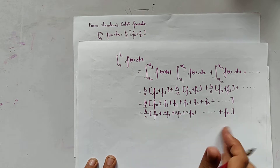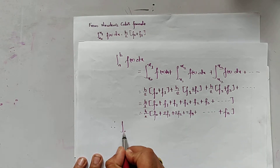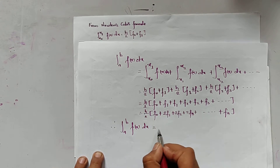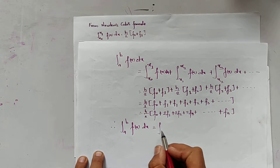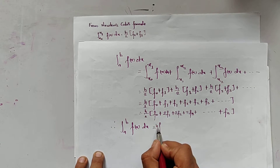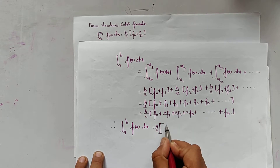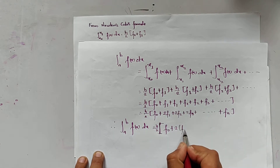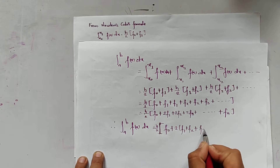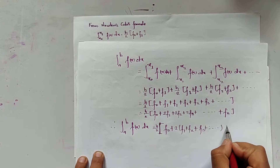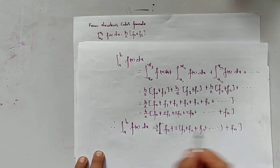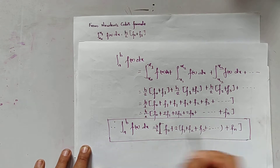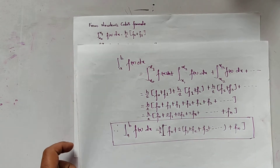So the integral from a to b of f(x) dx can be expressed in the form: h/2 times (f0 + 2(f1 + f2 + f3 + dot dot dot) + fn). This is the trapezoidal formula, or trapezoidal rule, for calculating the integration of a function.